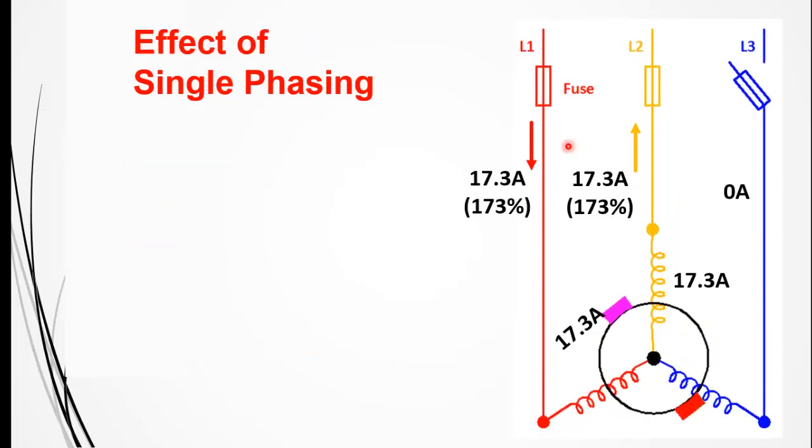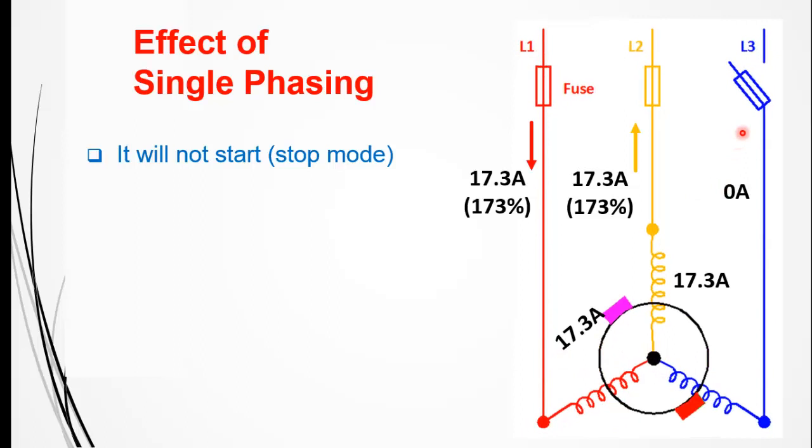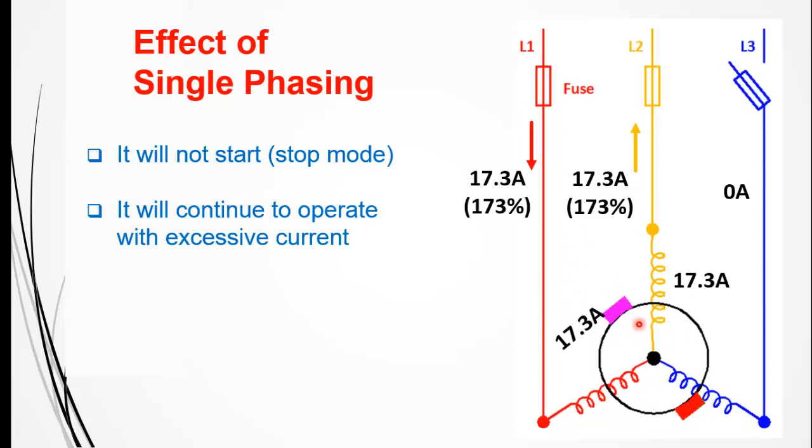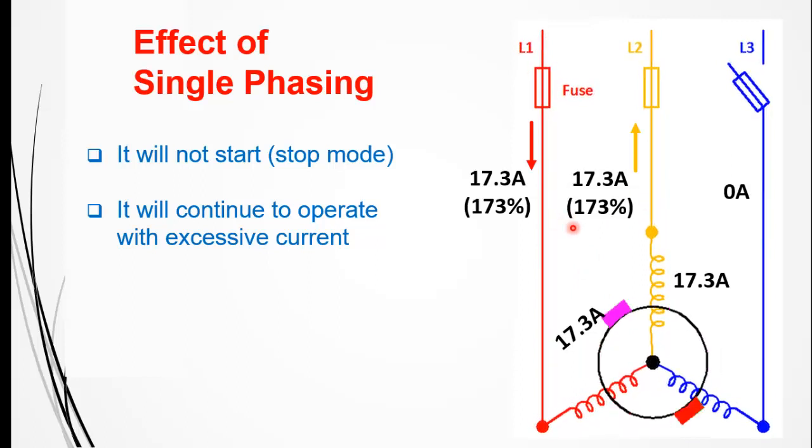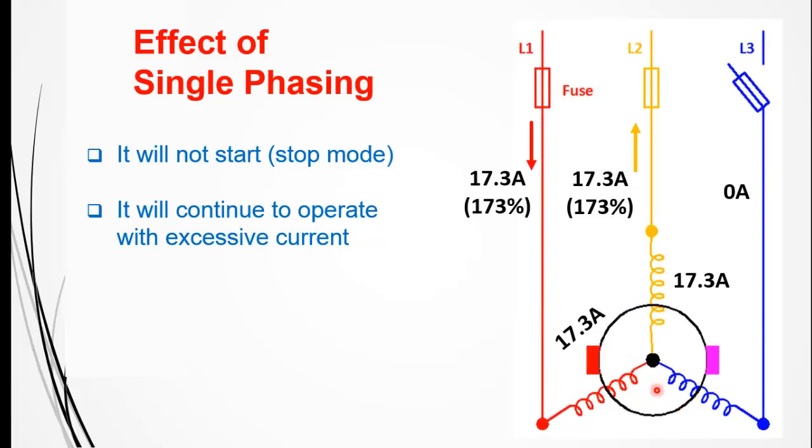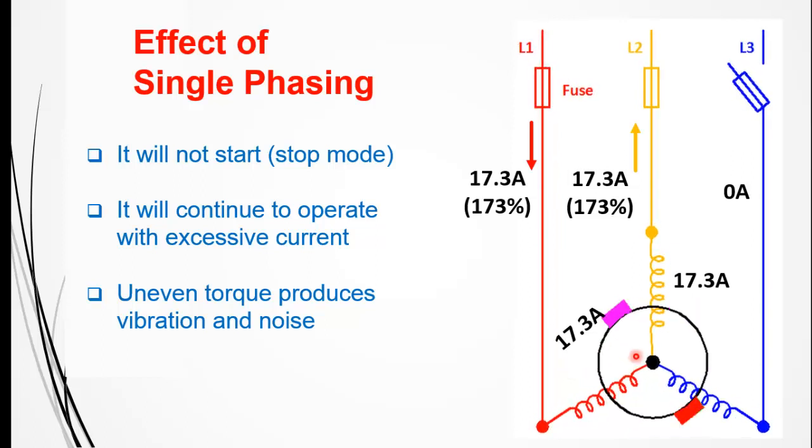At the end, I will discuss the effects of single phasing. If the motor is in stop mode and one of the phases is disconnected, the three-phase motor will not start. However, if the motor is already running, it will continue to operate on two phases but with excessive current, which is damaging to the motor windings. It will continue to rotate with excessive torque produced as a result of the excessive current that flows in the windings, which will cause the motor to burn. As the motor tries to produce excessive torque, it will cause vibration and noise, which is also very damaging.